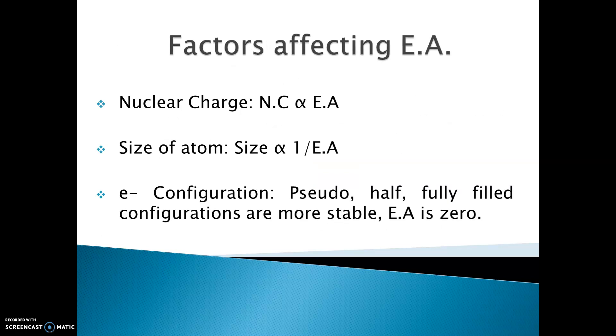Now, factors affecting electron affinity — there are three factors on which electron affinity depends: nuclear charge, size of atom, and electronic configuration.